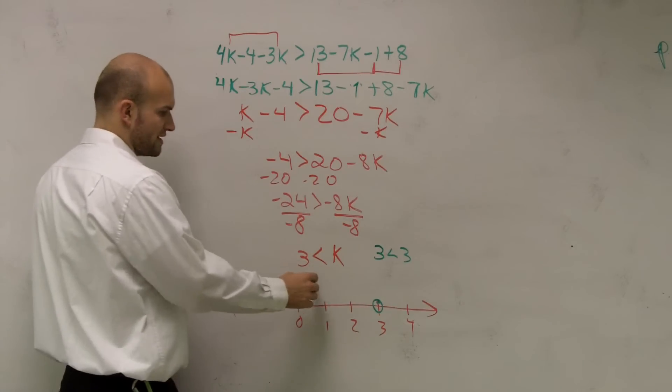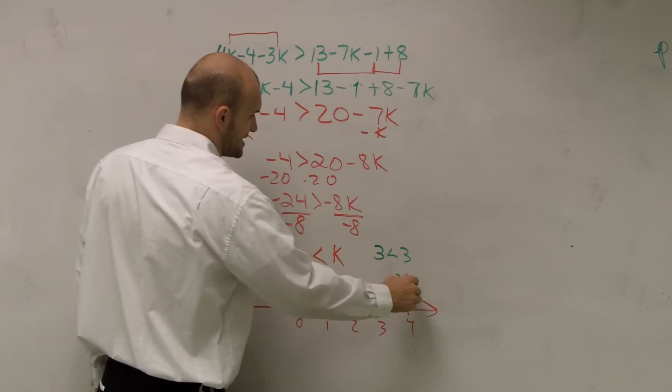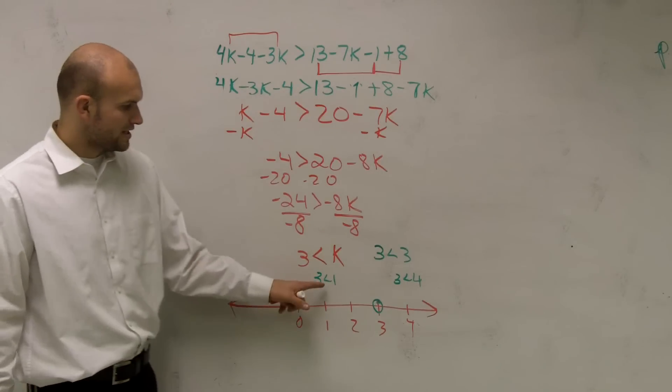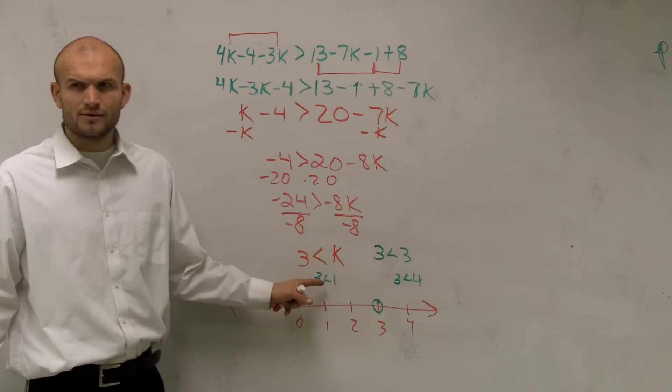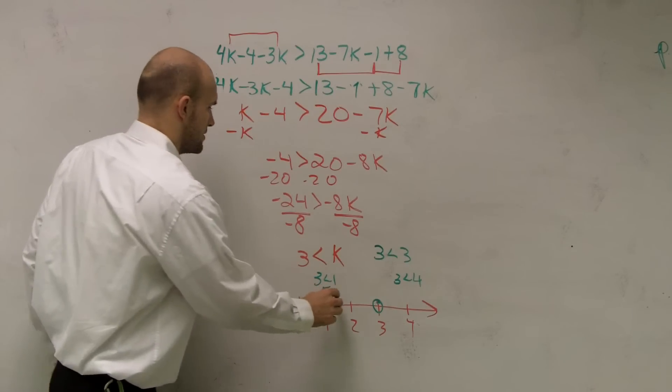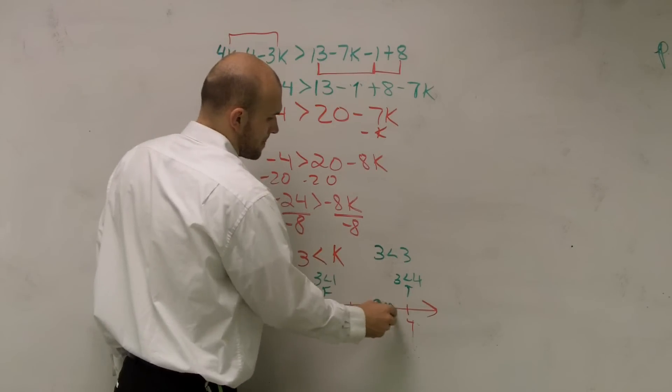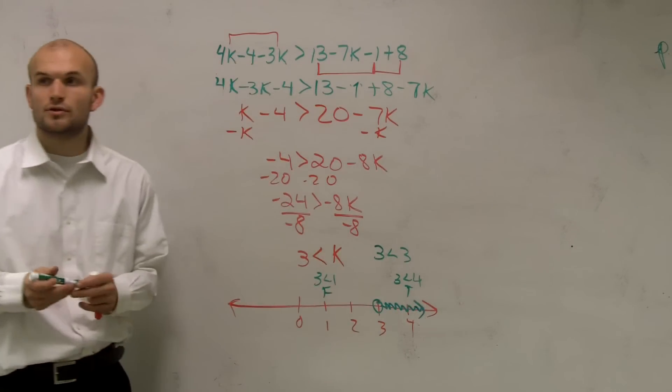Then, let's just pick two points. Let's do 3 less than 4 and 3 less than 1. So, which one of these points is true? Is 3 less than 1? That's false. Is 3 less than 4? That's true. So, you're going to go to the right.